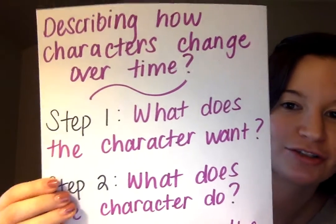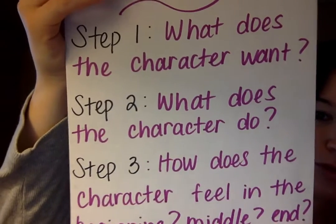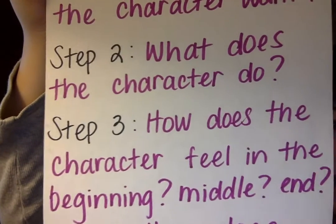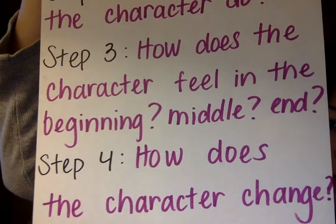Hi friends and welcome to part two of our lesson today. We are practicing a skill that we haven't worked on in a long time, so I'm excited to practice it with you. Today we are going to be describing how characters change over time. Step one: what does the character want? Step two: what does the character do? Step three: how does the character feel in the beginning, middle, and end? Step four: how does the character change? I'm going to show you how I follow these steps.